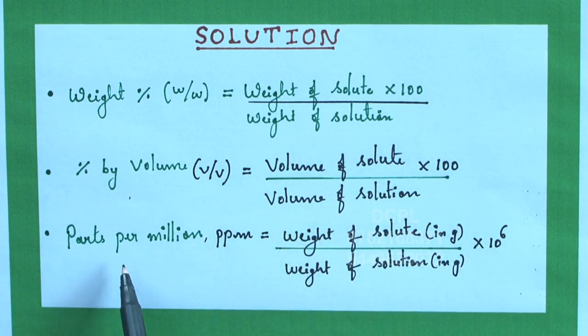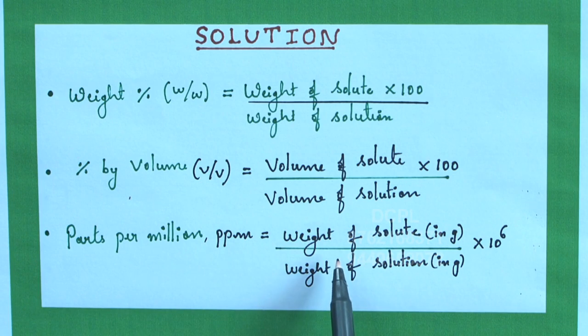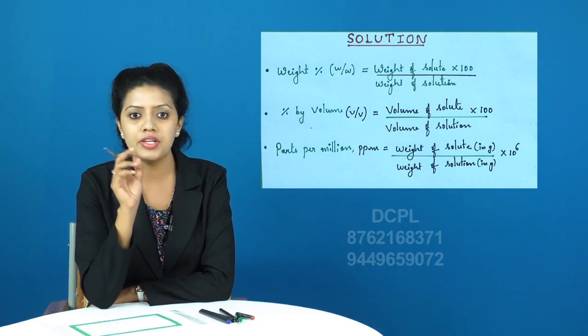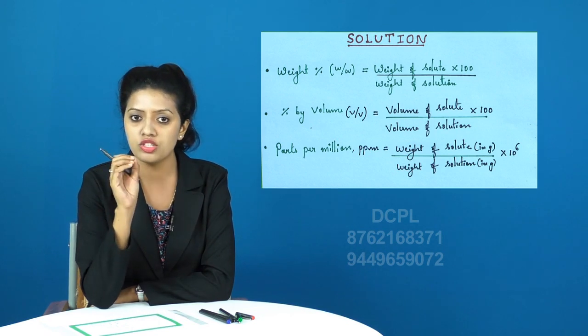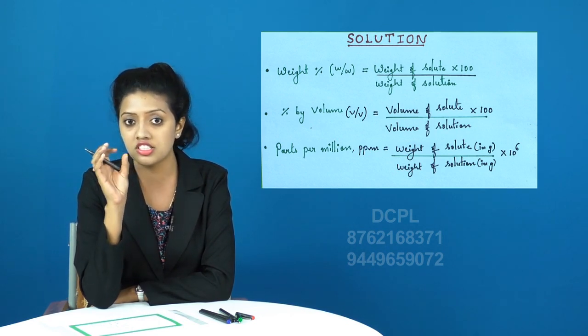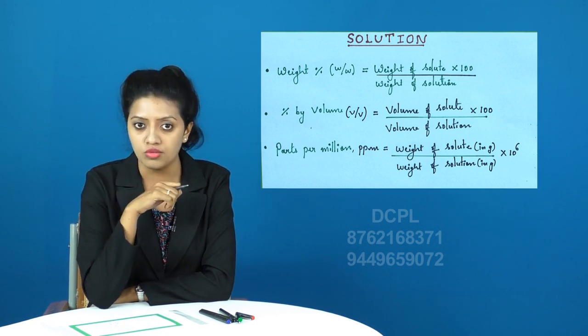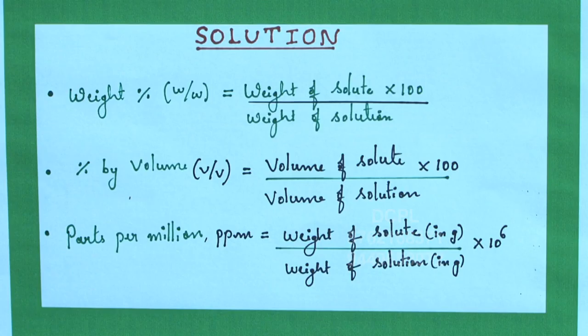Now coming to another case, parts per million. It is simply called as ppm and it is given as weight of solute in grams divided by weight of solution in grams times 10 to the power 6. Just note that ppm concentration term is always used when the solute quantity is in smaller amount or it is present in trace amounts.